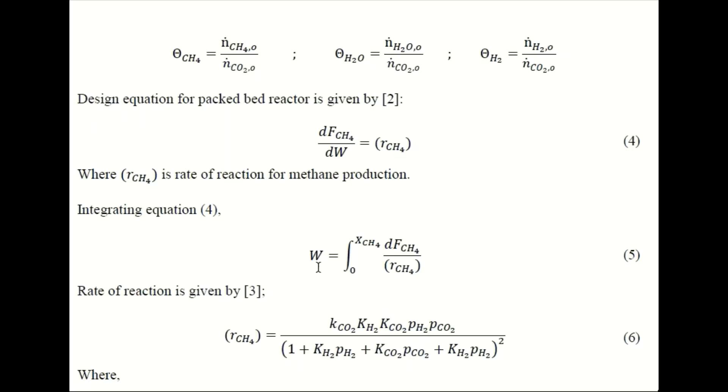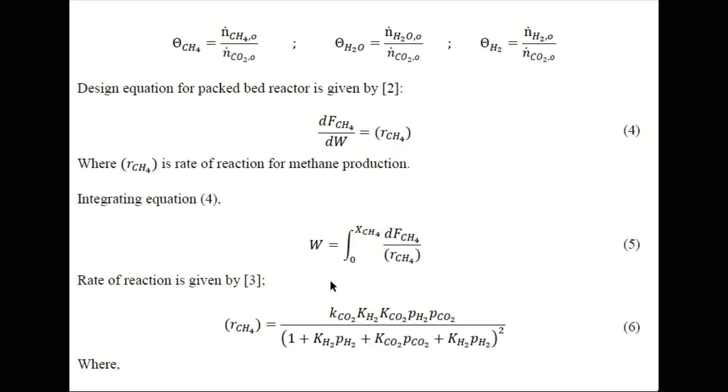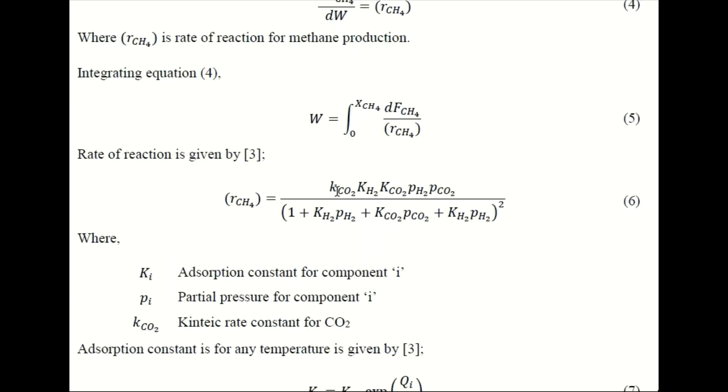And integrate to get the value of the weight of the catalyst. So now we can see here different constants like KCO2 which is kinetic rate constant for CO2 conversion. And these capital Ks are for adsorption constants, like gaseous components get adsorbed on the surface of catalyst where they take part in the reaction to get converted into products.